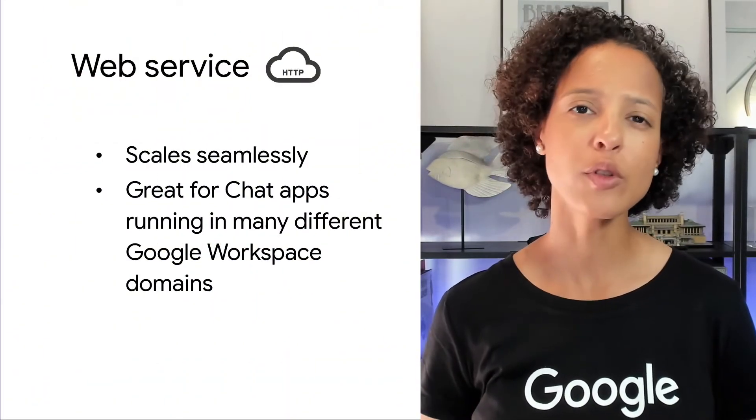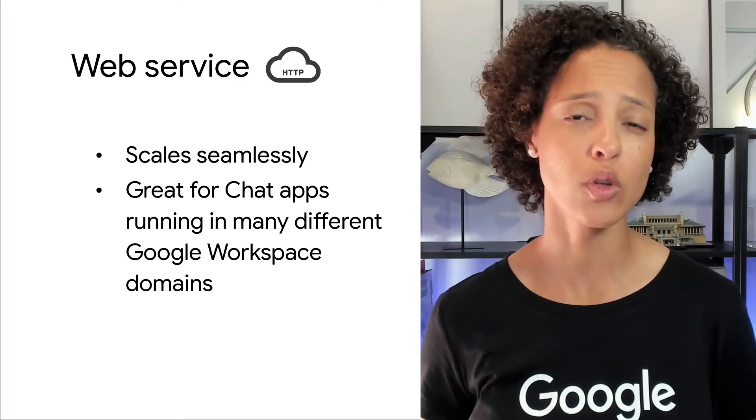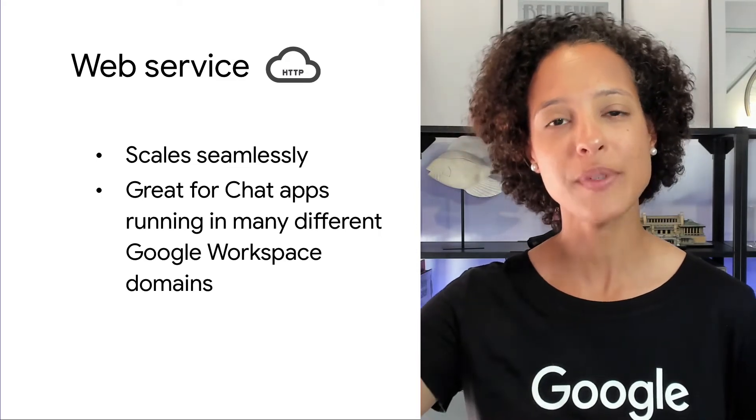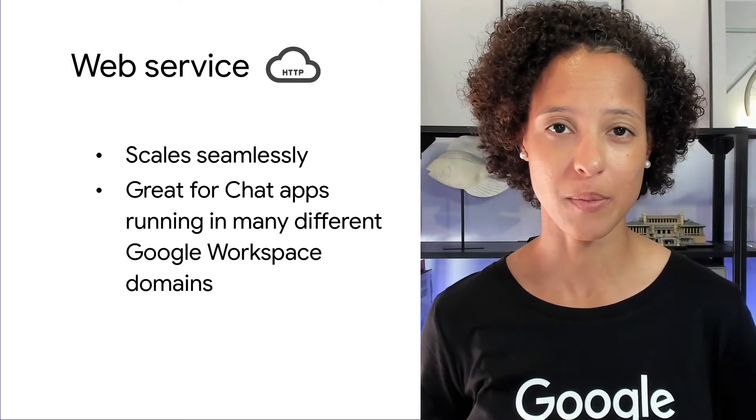Let's say you were building a financial analytics chat app and wanted to monetize it. To make your chat app publicly available, you would have to publish it on the Google Workspace Marketplace. For such an app, I would look to use the web service implementation with something like Google Cloud Functions. This approach allows you to scale your app seamlessly as it spans across a multitude of Google Workspace domains.